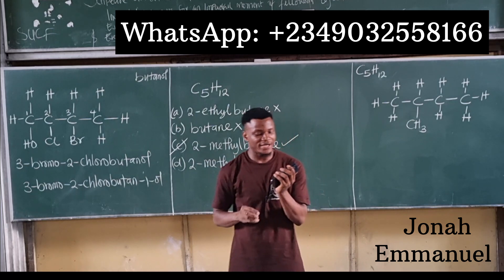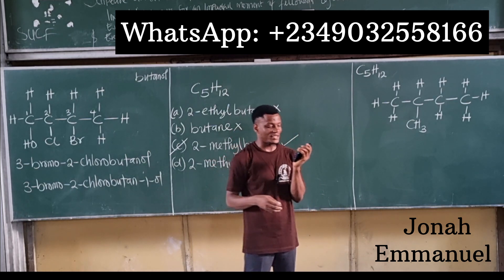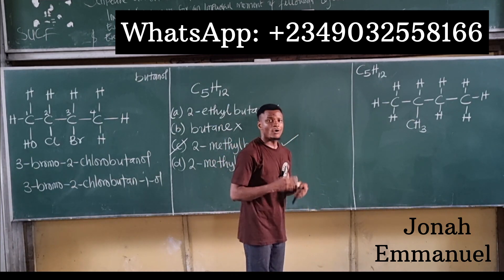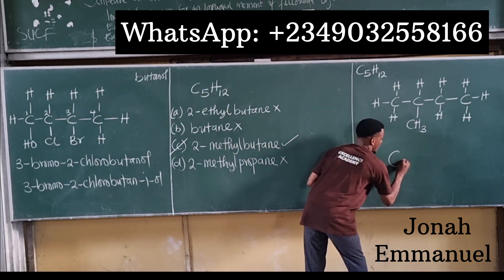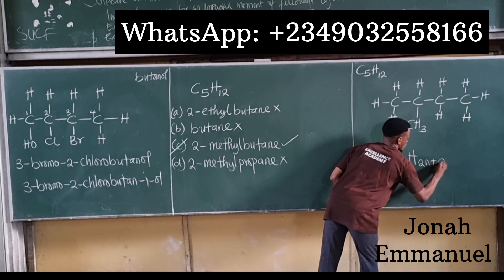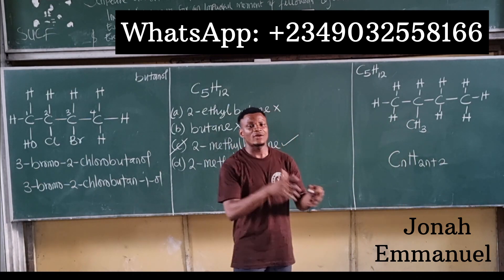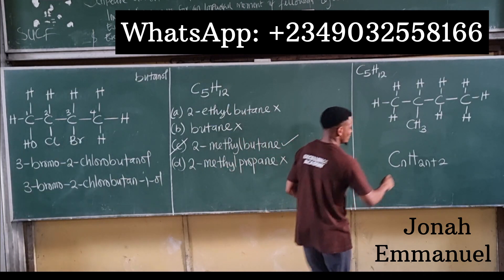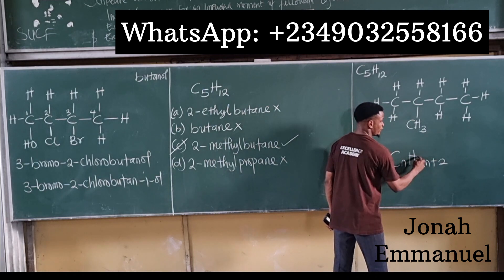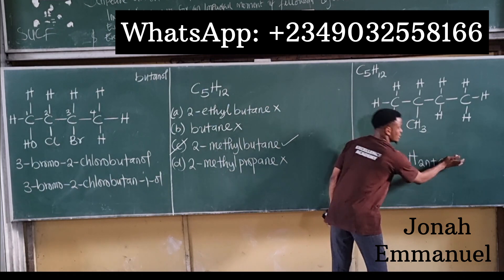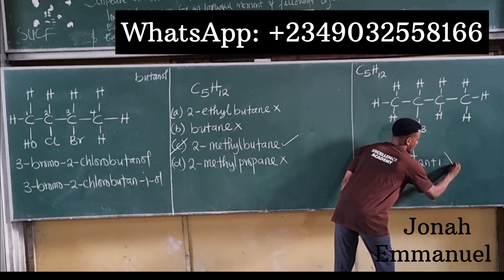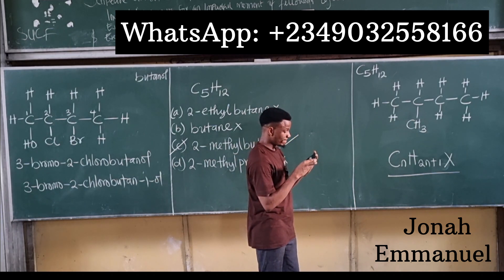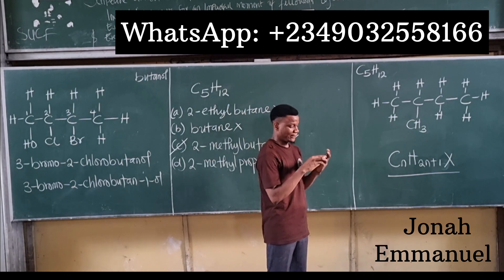The last question asks for the general formula for haloalkanes, where X represents the halide. For alkanes, the general molecular formula is CnH2n+2. When you have a haloalkane, a halogen replaces one hydrogen atom, so the 2 in the formula becomes 1 and the halogen X is added. The general formula becomes CnH2n+1X — option D.